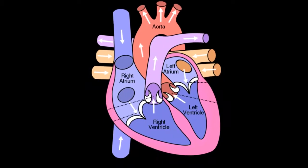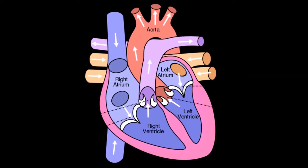The blood then comes back from the lungs after it's been oxygenated through the pulmonary veins, which enters the left atrium.